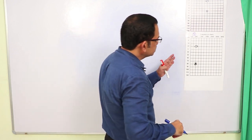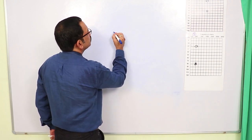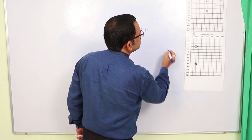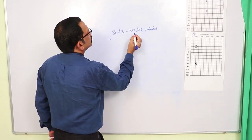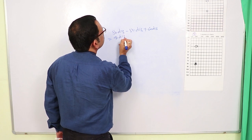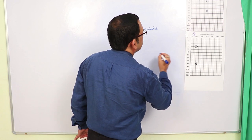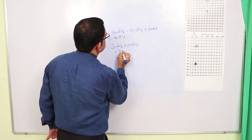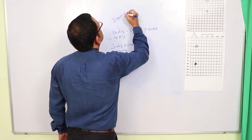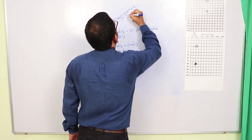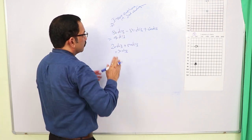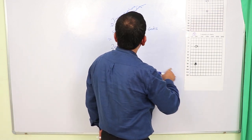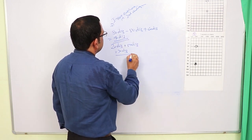Now in the second audiogram using insert earphones, the minimum masking level will be threshold in the test ear (80 dB) minus 50 dB plus AB gap in the non-test ear that comes out to be 60 dB — so it is 90 dB. The minimum level of masking is 90 dB and the maximum level of masking is 70 dB (20 dB plus 50 dB). While using insert earphones also, it is not possible to carry out the masking process in the second audiogram because the minimum level of masking is 90 dB and the maximum level is 70 dB.